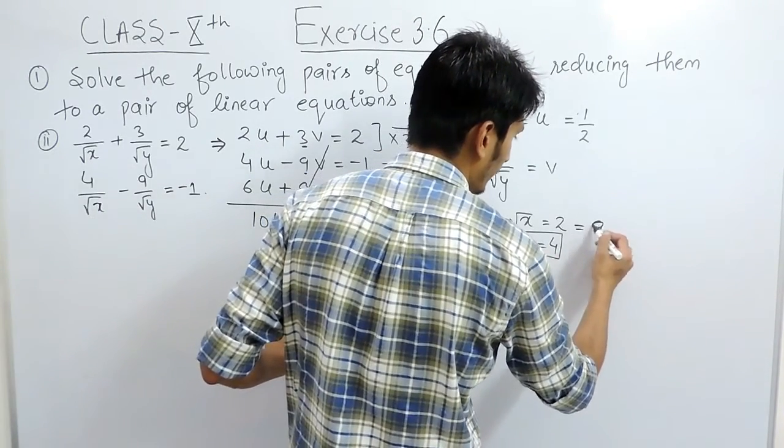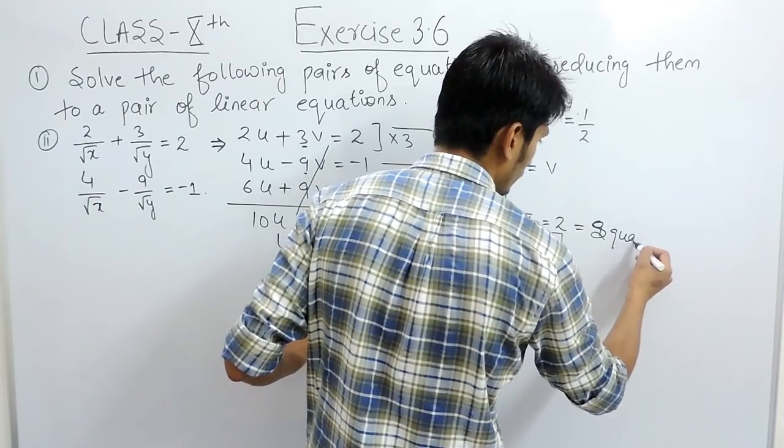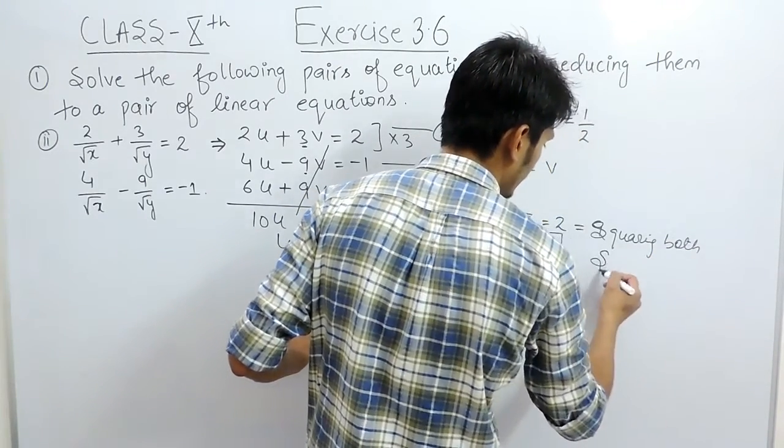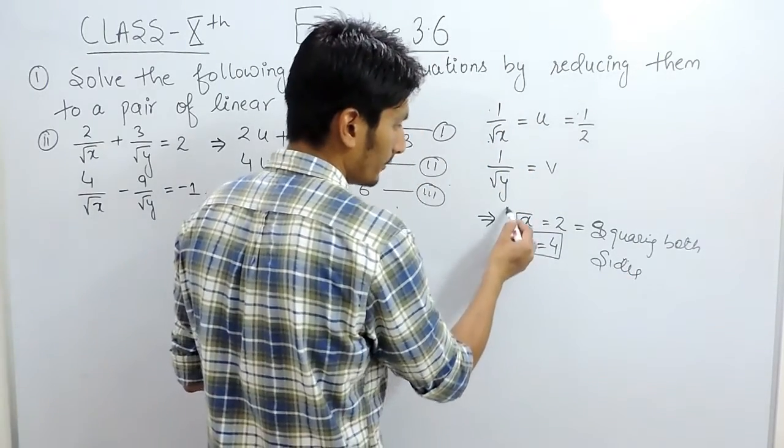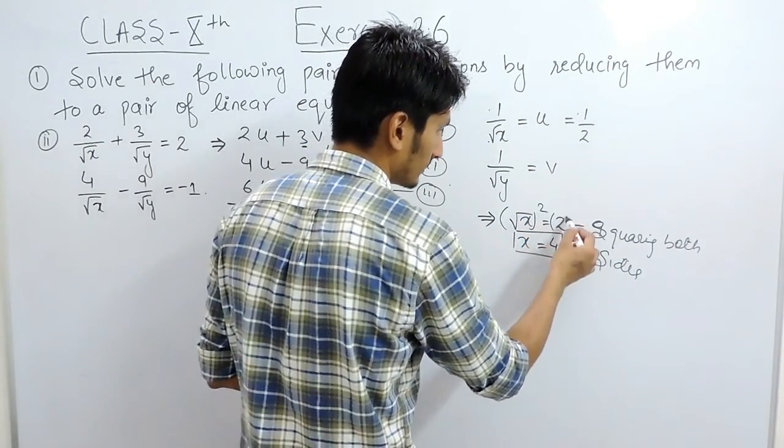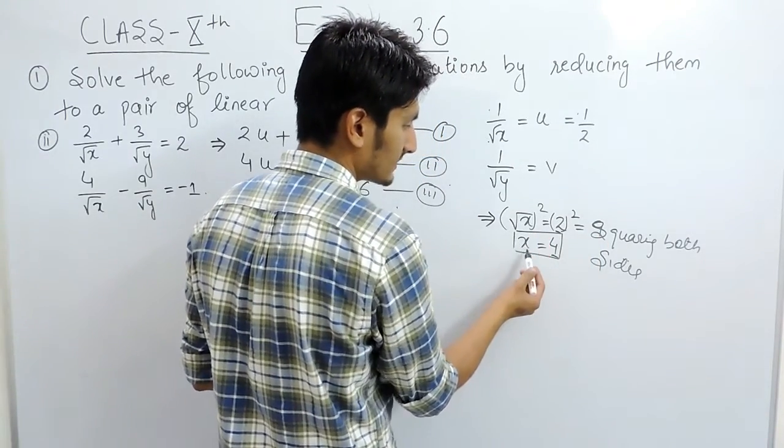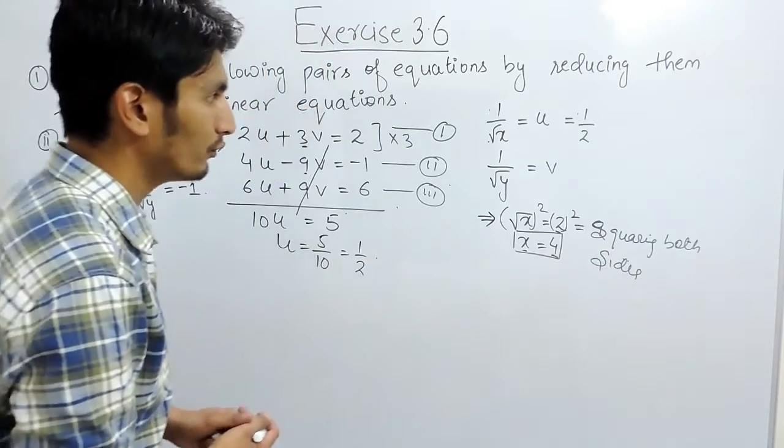For that you have to square both sides. And if you square both the sides, this will become 4 and square and the root will be cancelled and x will be equals to 4.